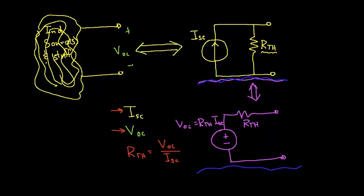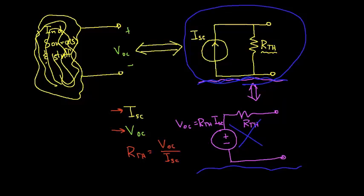So that's a useful thing to know. The process of finding a Norton equivalent circuit is exactly the same as finding the Thevenin equivalent circuit, except that at the end you draw something that looks like this rather than something that looks like this. With that, I think we'll end this video, and then there will be at least one example of computing a Norton equivalent circuit. Hopefully you found this useful — thanks for watching.